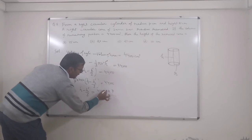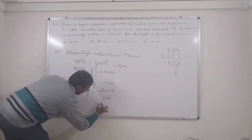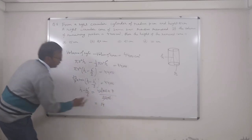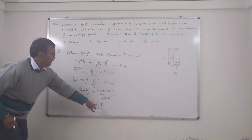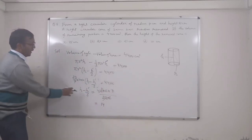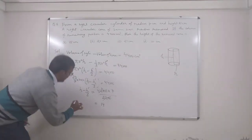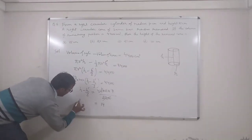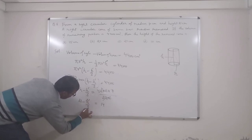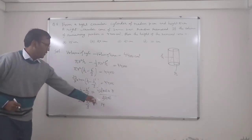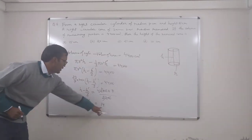After cancellation, we get 7 × 14 on one side. The height of the cylinder is already given as 21 cm. So we write: 21 − h'/3 = 14.